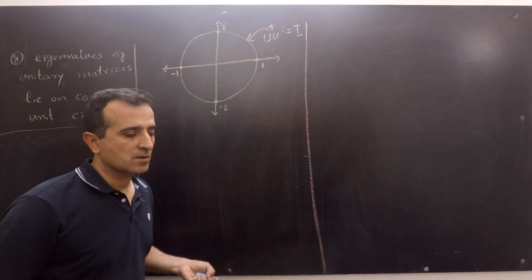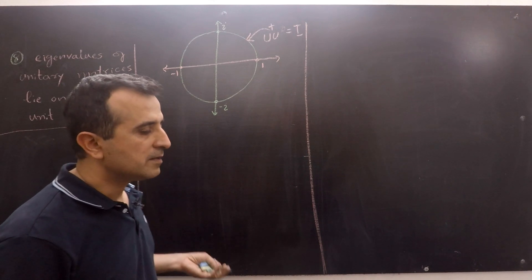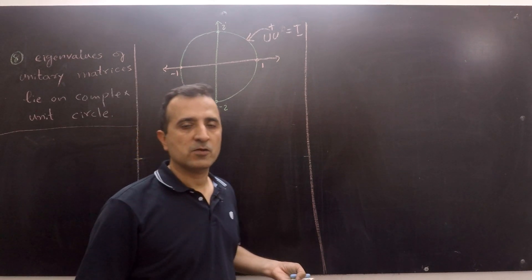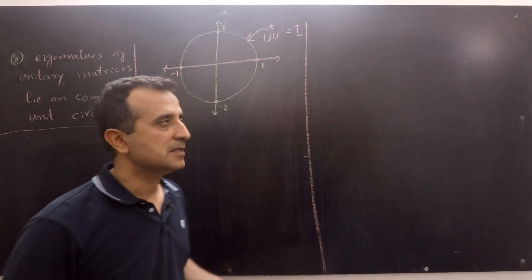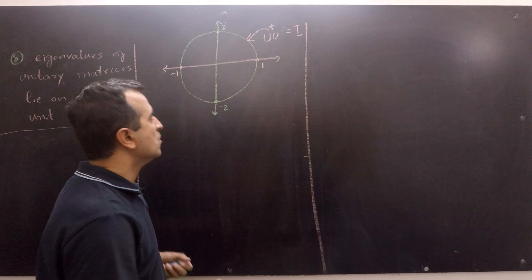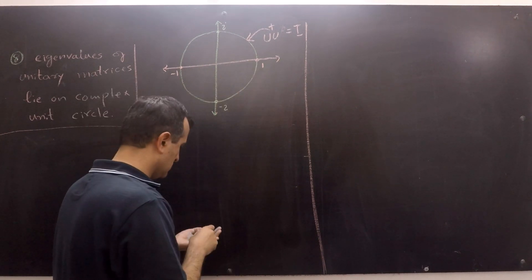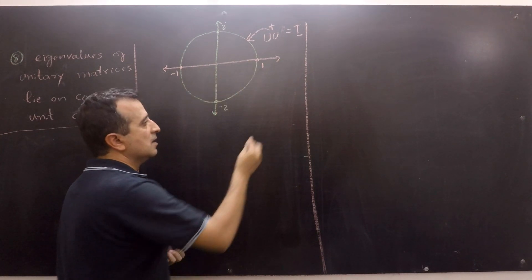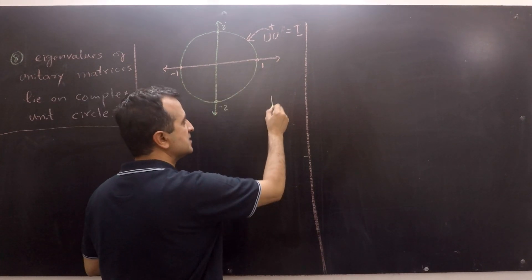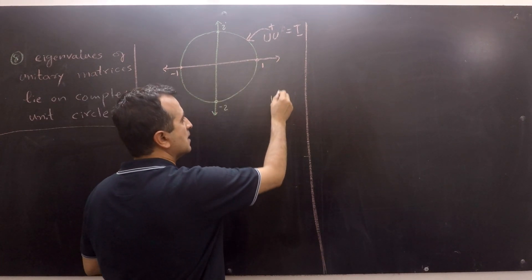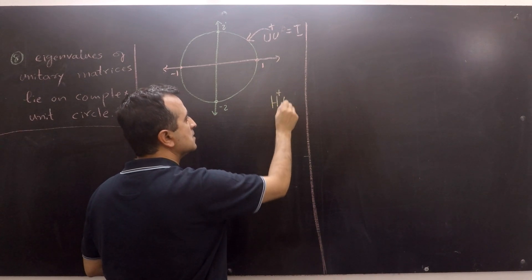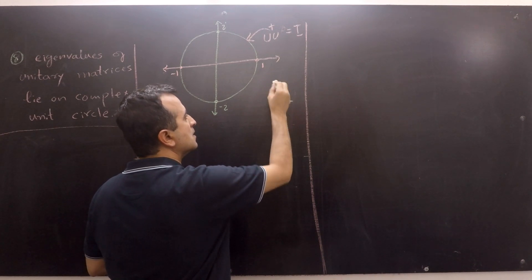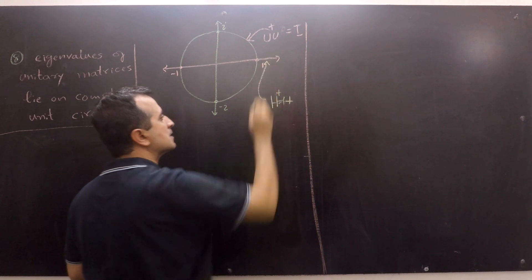Whereas, all the eigenvalues of Hermitian matrices lie on the real line. So, Hermitian matrices' eigenvalues lie on the real line.